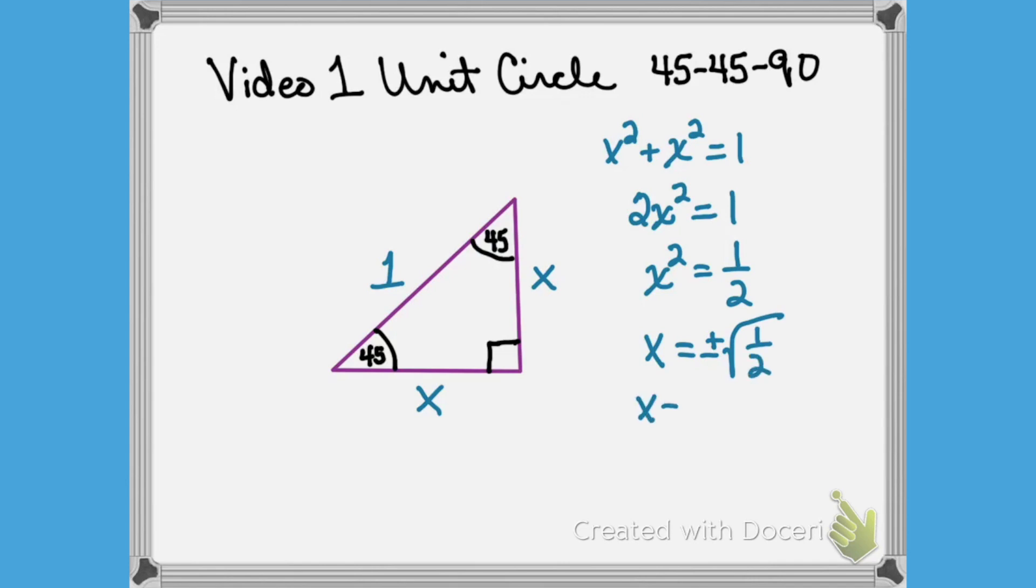I won't consider the negative solution because I'm dealing with lengths of a triangle. I'm going to break up that fraction into the numerator and denominator being under the square root, which gives me 1 over the square root of 2.